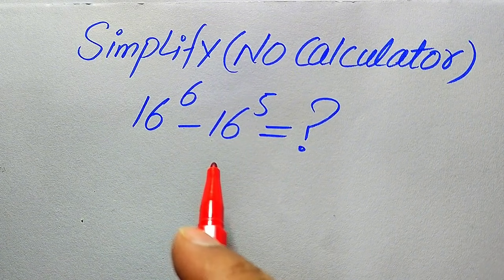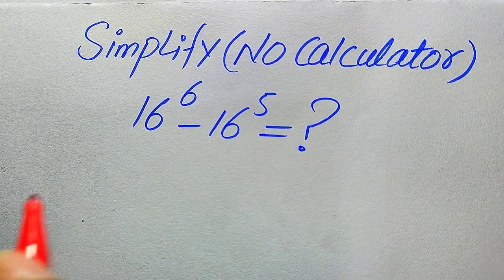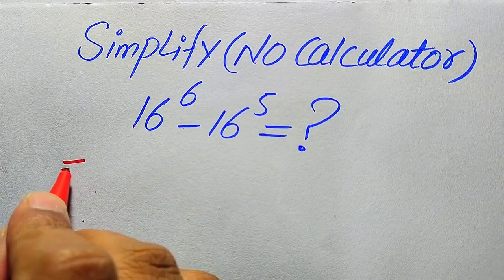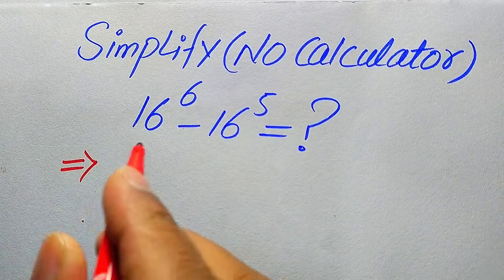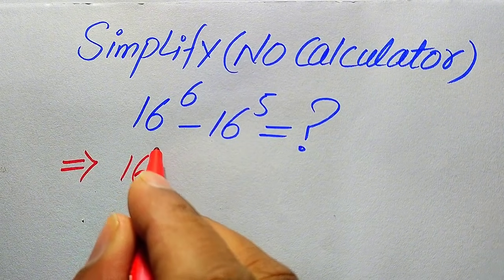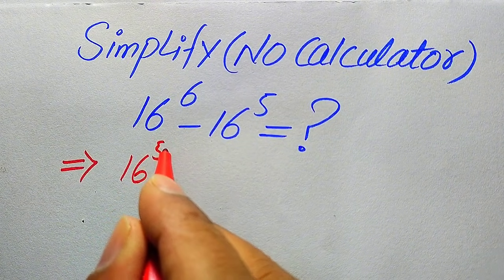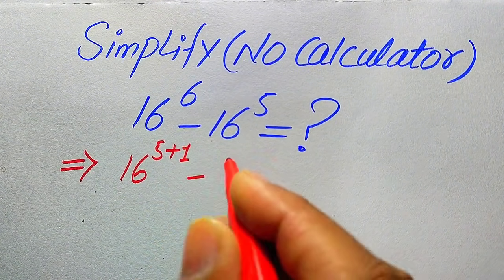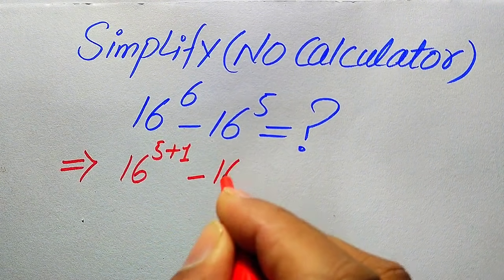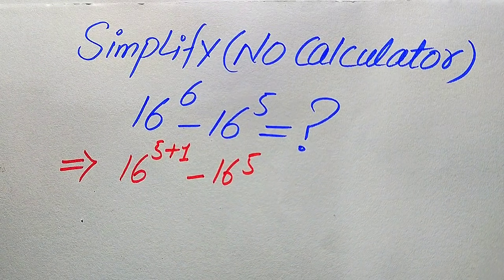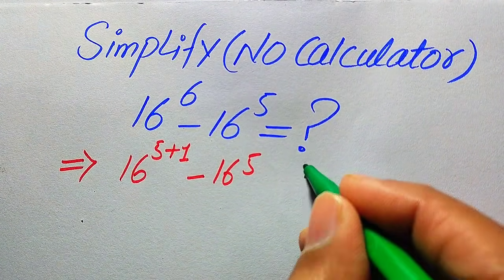To do this, we focus on the exponent of the first term, which is 6. We rewrite 6 as 5 plus 1, so the expression becomes 16 to the power of 5 plus 1, minus 16 to the power of 5.